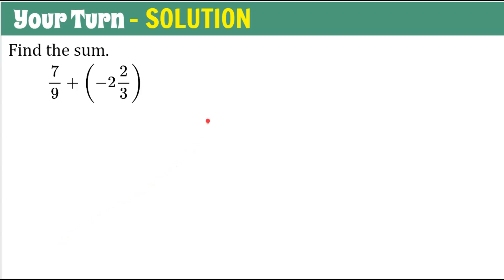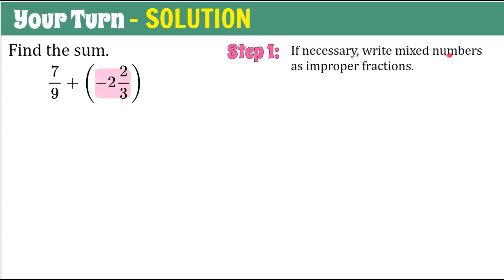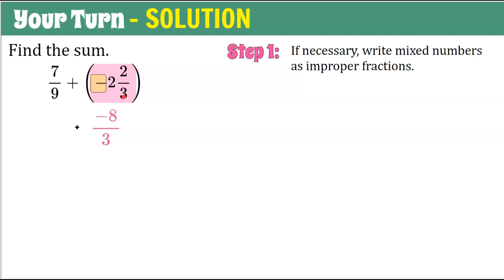Welcome back. Here's our solution. Step one: write mixed numbers as improper fractions. We have a mixed number, so we rewrite it as an improper fraction. Three times two is six, plus two is eight, and it's negative — so negative eight over three. We're going to add seven-ninths and negative eight-thirds. Remember, we put the negative sign in the numerator.